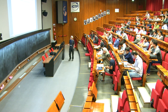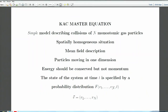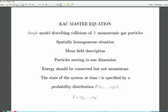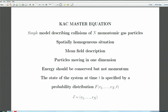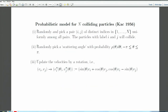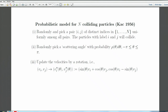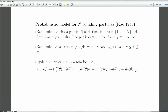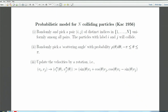The state of the system at any time t is specified by a probability distribution f which depends on the velocities v_1 up to v_n of the particles and on time t. For notational convenience I'll write this velocity vector abbreviated as v with an arrow. Now, what is the model?